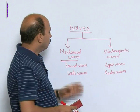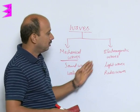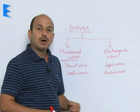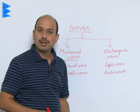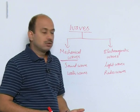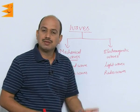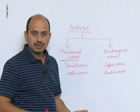These are the two types of waves: mechanical waves and electromagnetic waves. Now, how does wave motion take place? Wave motion is a vibratory disturbance in a medium.